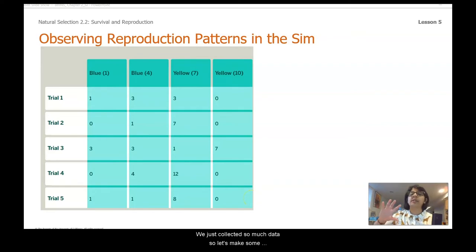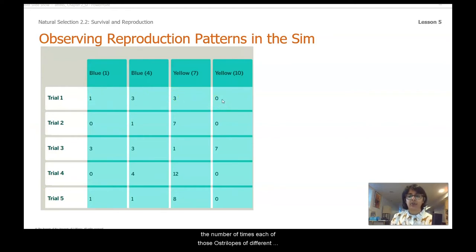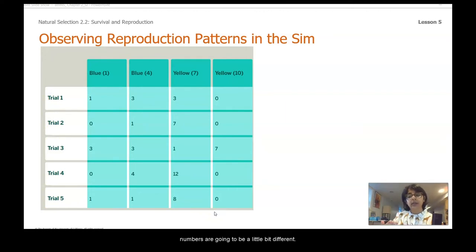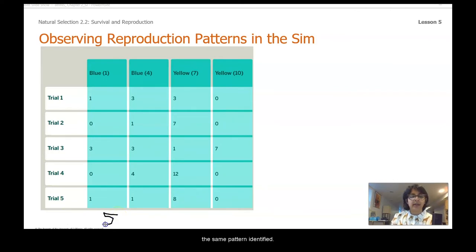We just collected so much data, so let's make some sense out of it and identify some of the trends and patterns. If you were following along with me, your data table should look exactly like this — I've filled it in with all the numbers we collected for the number of times each australobe of different colors reproduced. If you were using Amplify at home, your numbers will be a little bit different. Now I asked you to calculate the averages. I'm pretty sure that even with different numbers, we will have the same pattern identified.